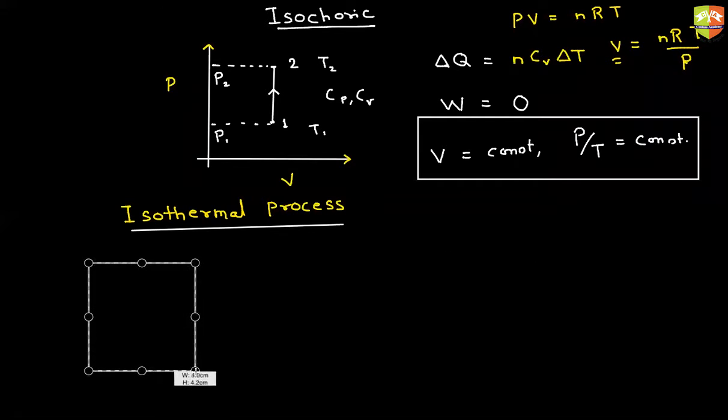Write down isothermal process. We are all the time drawing PV graph only, but it need not be PV graph. It could be P and T, volume and temperature, between any two macro variables. Don't worry if the diagram is something else other than PV diagram. Isothermal process is a process in which temperature is constant.